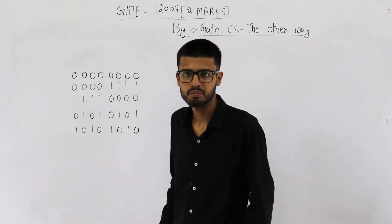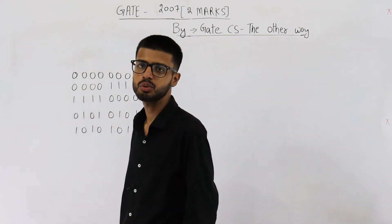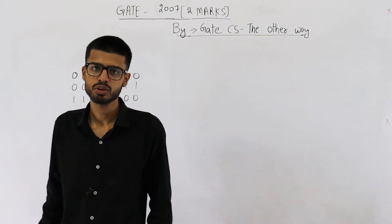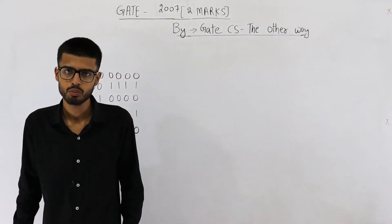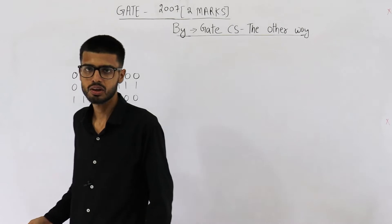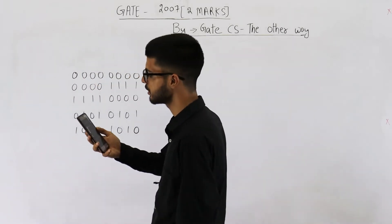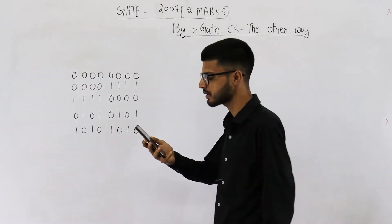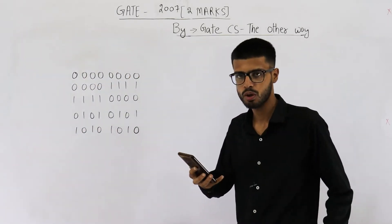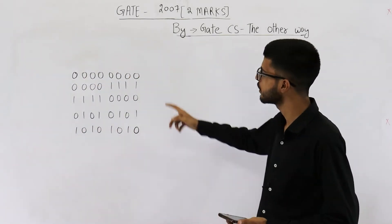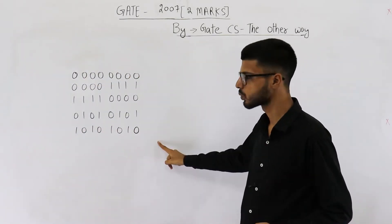Hello people, welcome back. This great 2007 question is for two marks. Have a look — they are saying: an error correcting code has the following code words.